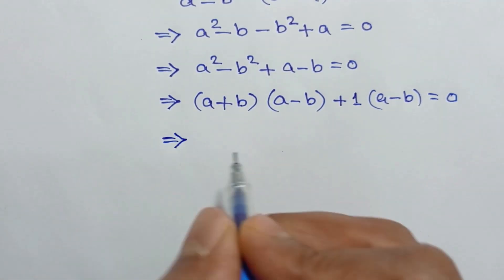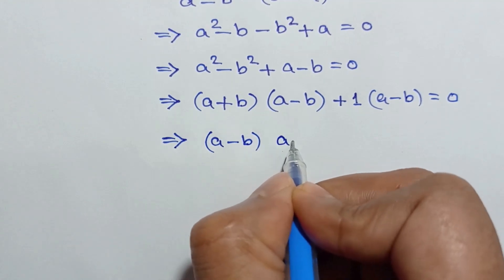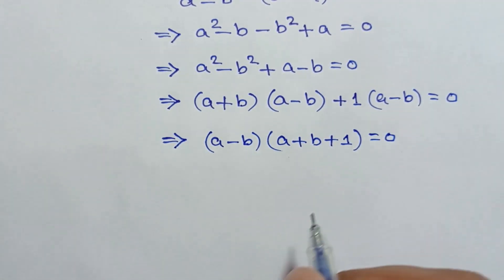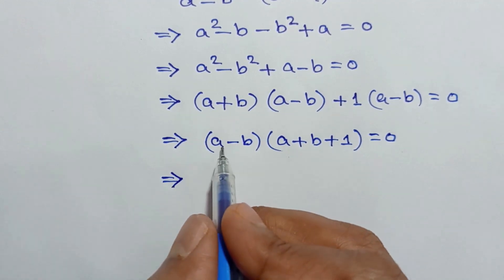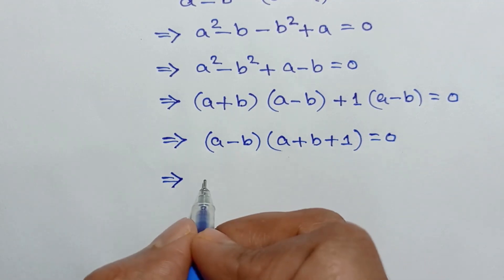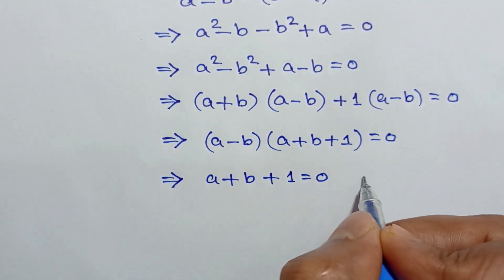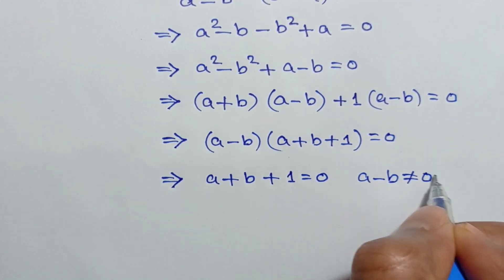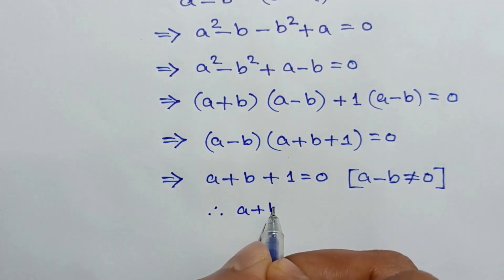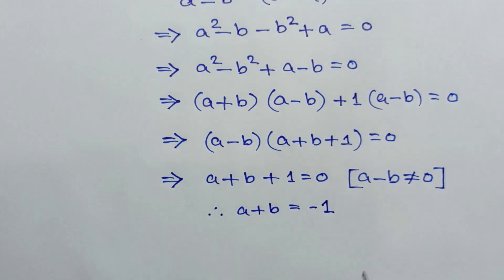Taking (a - b) common, we have (a - b)(a + b + 1) = 0. Since a is not equal to b, (a - b) ≠ 0, so we must have a + b + 1 = 0, which gives us a + b = -1.